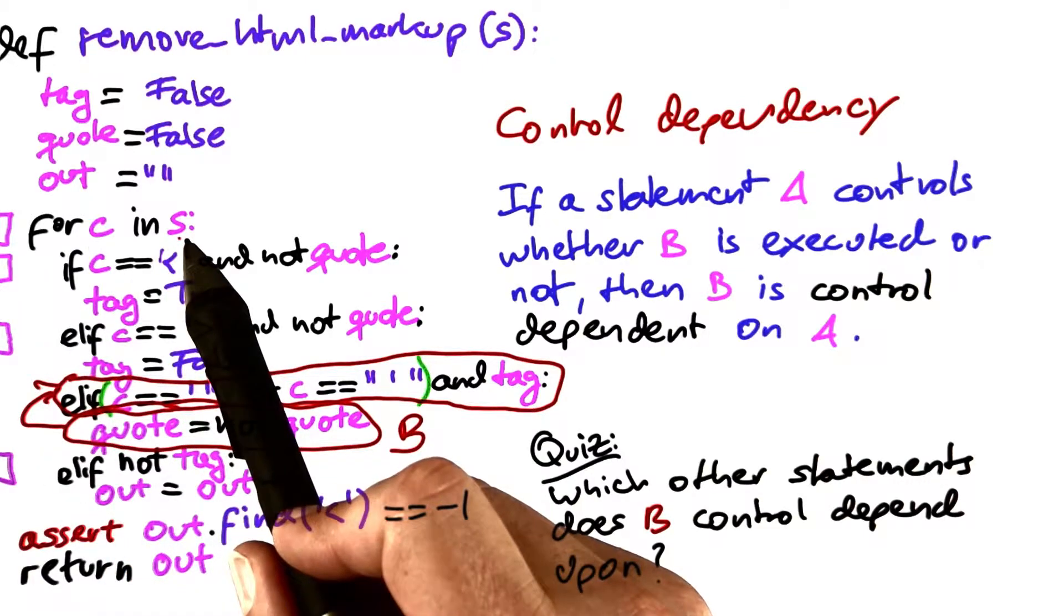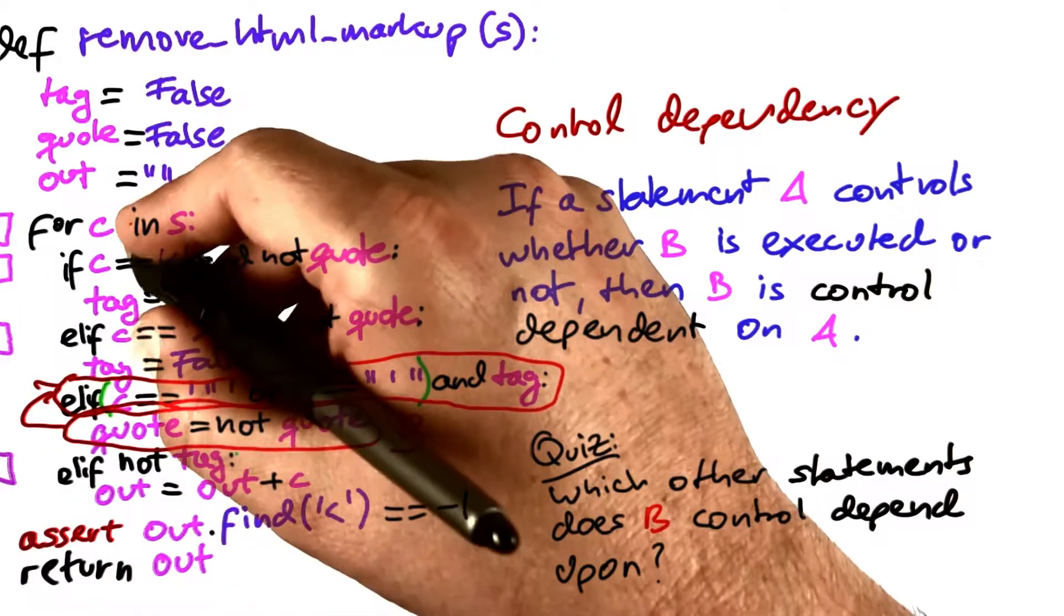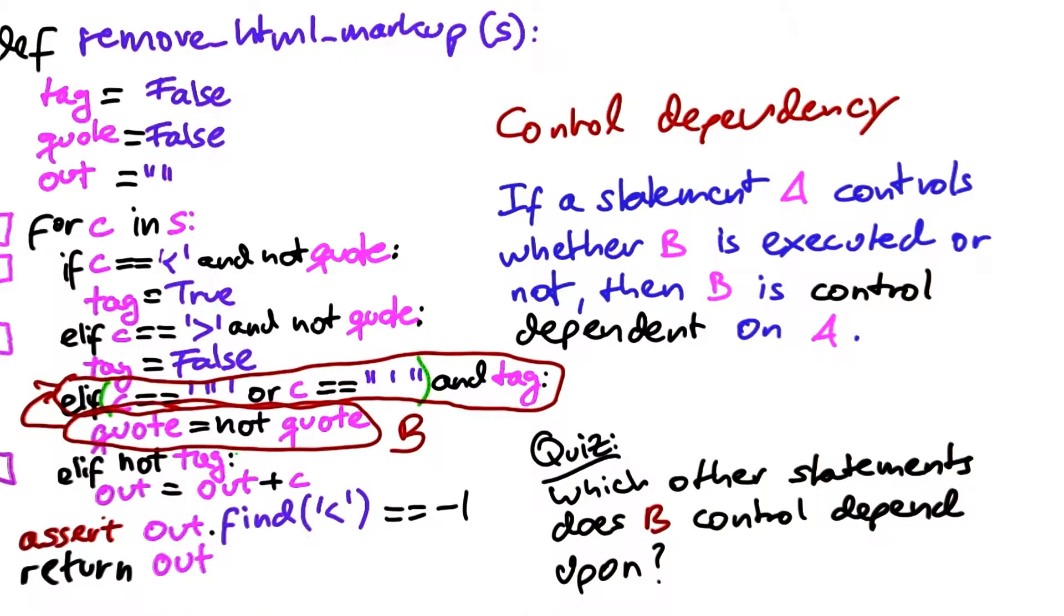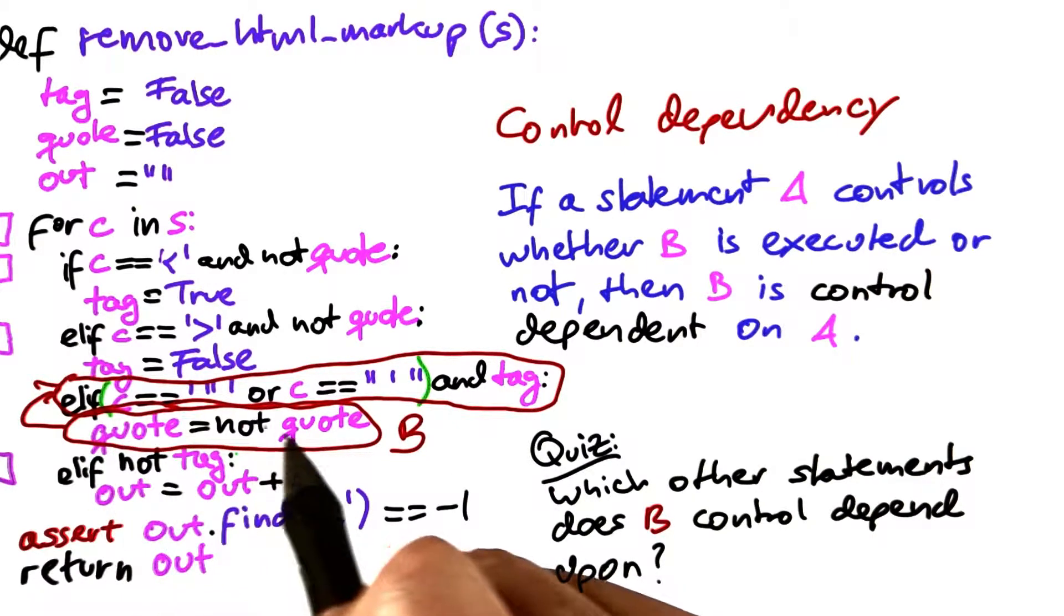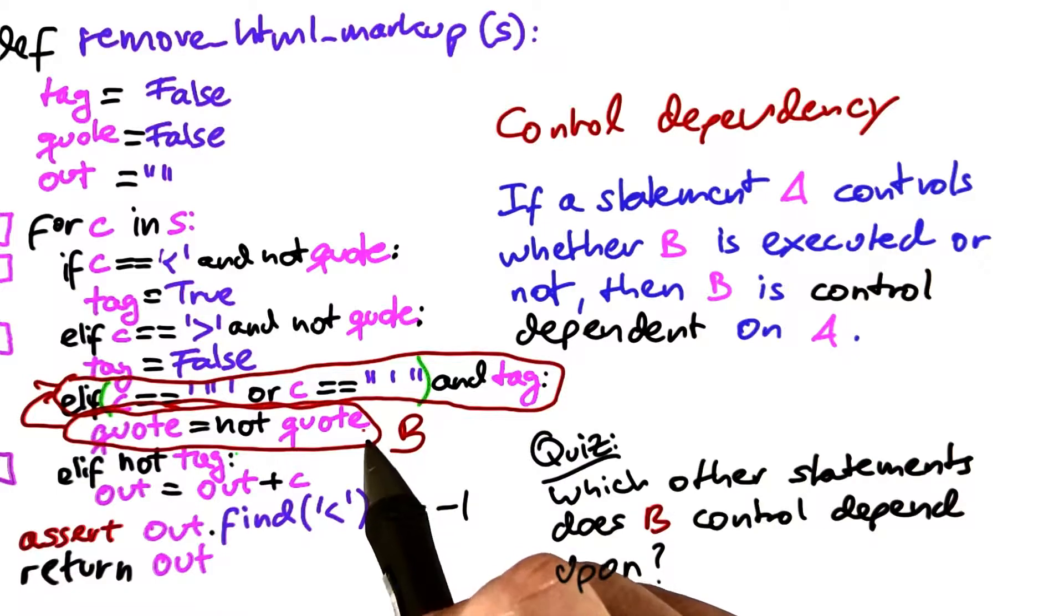The for statement up here indeed controls whether this entire block is executed or not. Therefore, it also controls whether b is executed or not.